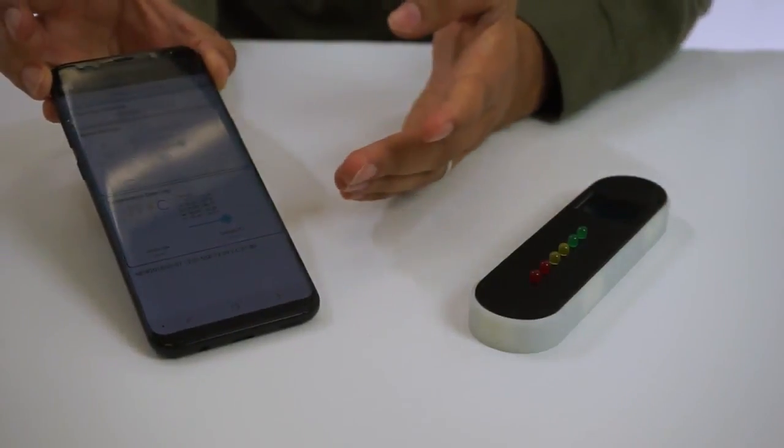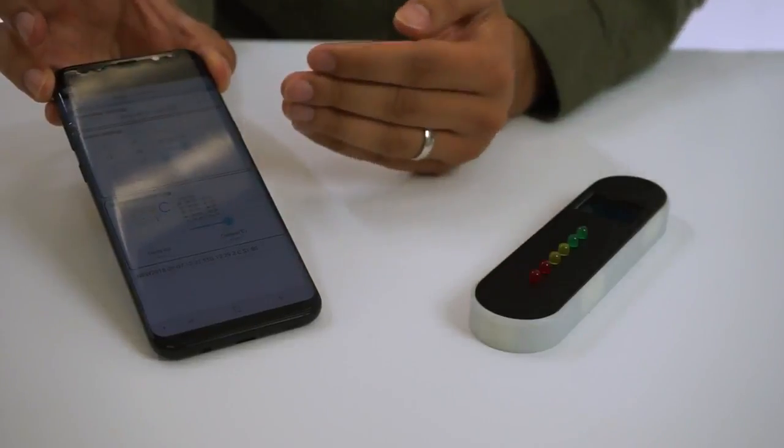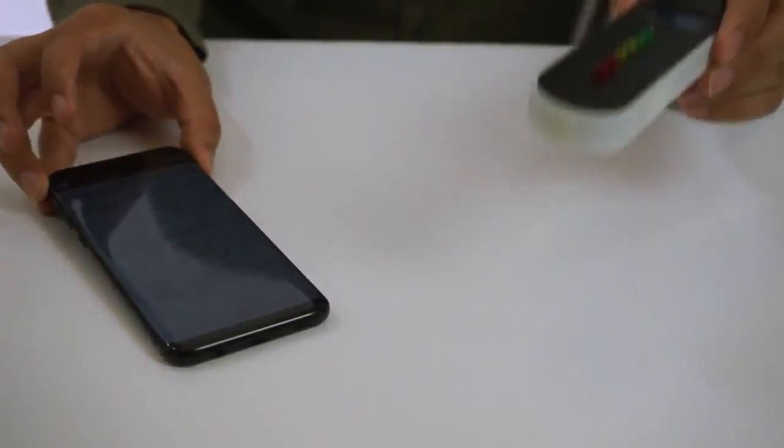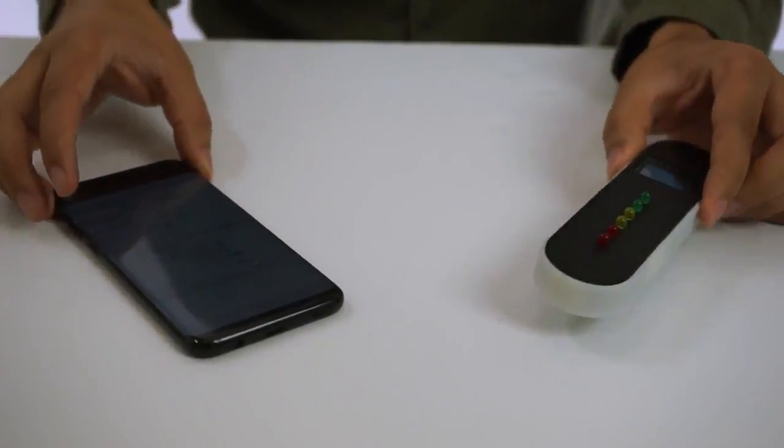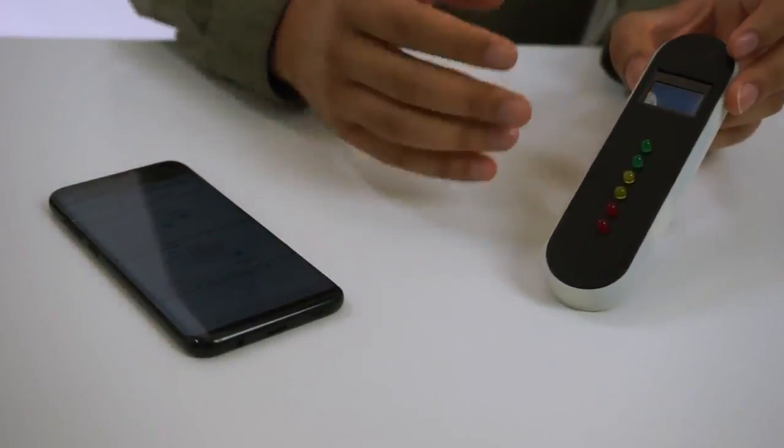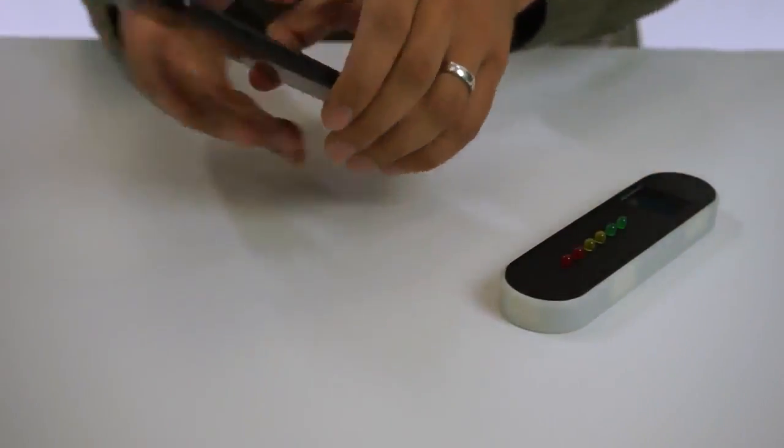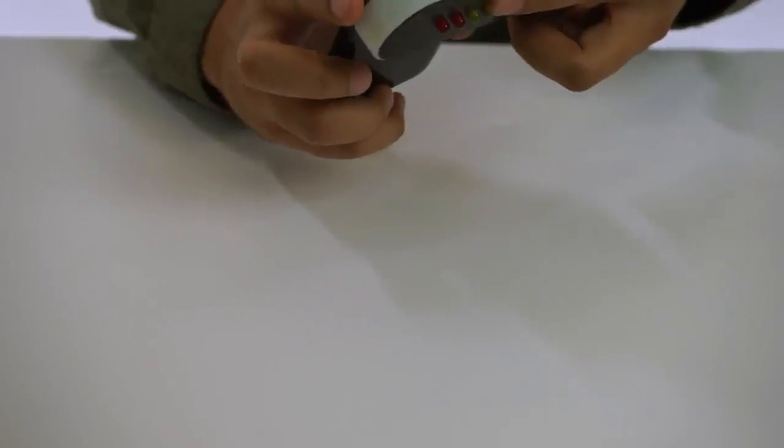As you can see, we have the LPC-804 NFC clock demo already available from the App Store, and we have the reference design. Right now the reference design is turned off, but once I pair it to the cell phone, it's going to be activated and turned on.